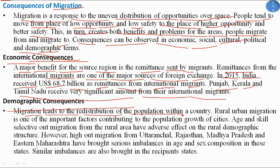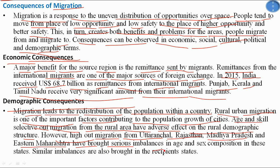Demographically, migration leads to redistribution of population within a country. Rural-urban migration is an important factor contributing to city population growth. Age- and skill-selective out-migration from rural areas adversely affects rural demographic structure. High out-migration from Uttarakhand, Rajasthan, Madhya Pradesh, and Eastern Maharashtra has brought serious imbalance in age and sex composition in those states, and similar imbalances occur in recipient states as well.